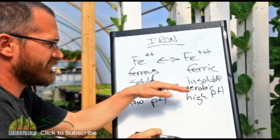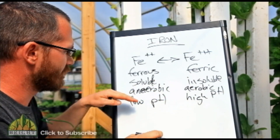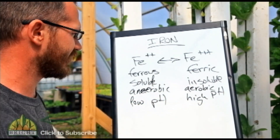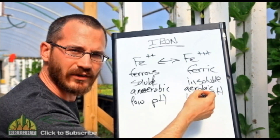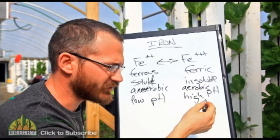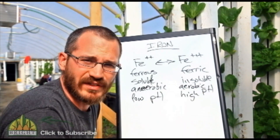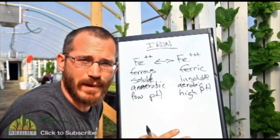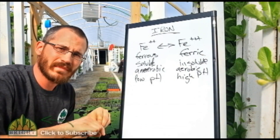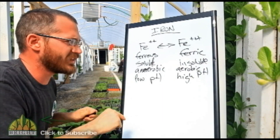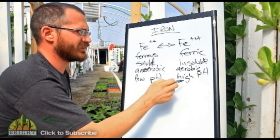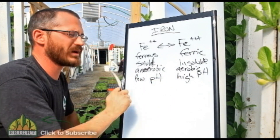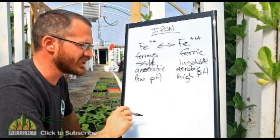When you look at these different conditions, you see that most aquaponic systems are aerobic — we want our systems to be good and aerobic — and most of them have relatively high pH. That's bad news. What it means is that most of the iron in our system is unavailable to our plants, because it's aerobic and it's high pH.